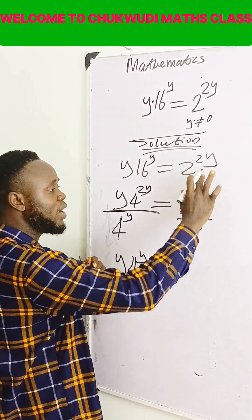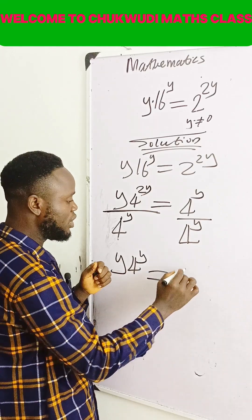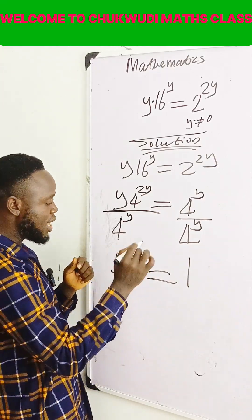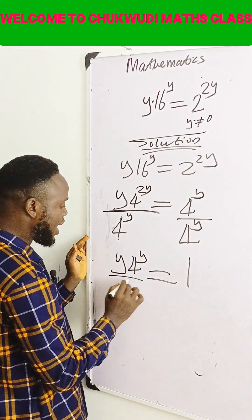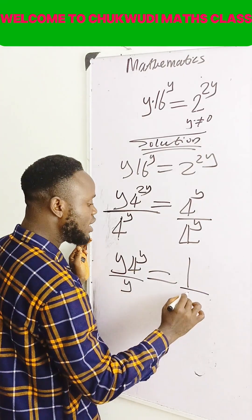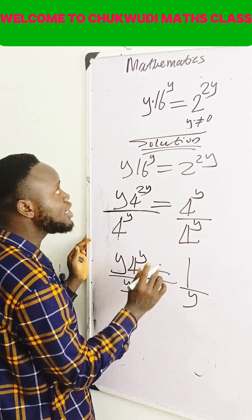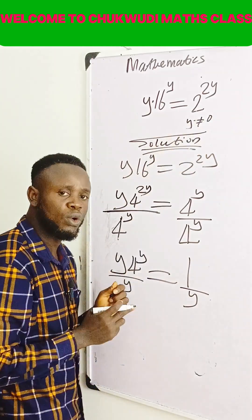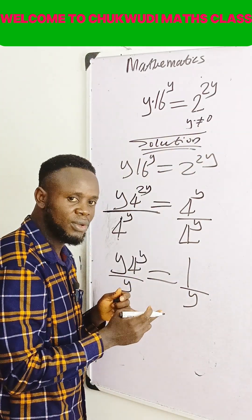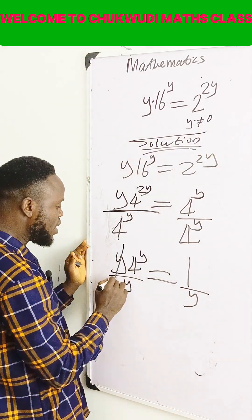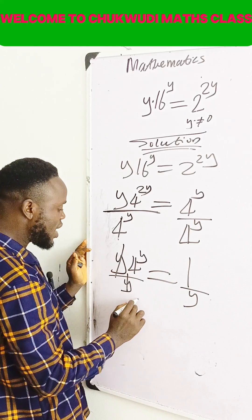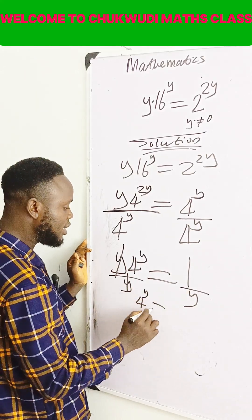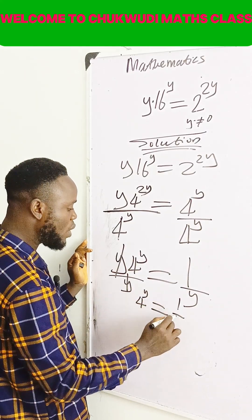Then this one divided by itself will give you 1. At this point, I can divide both sides by y — divide this one by y — simply because they say that y is not equal to 0. Then when I do that, I will now have that 4 raised to the power y is equal to 1 over y.